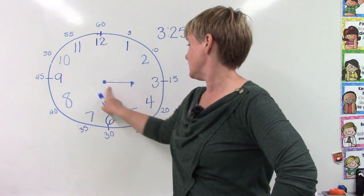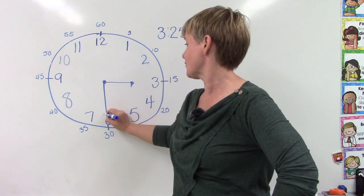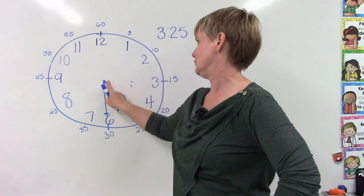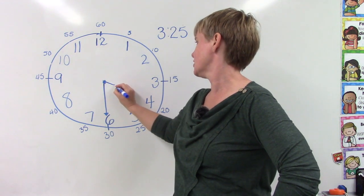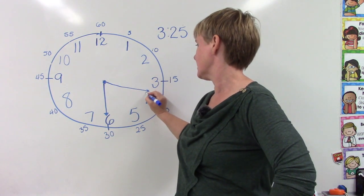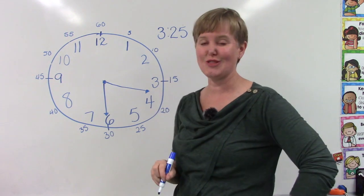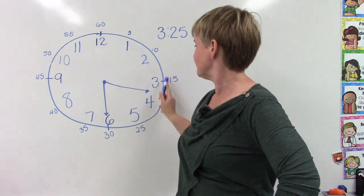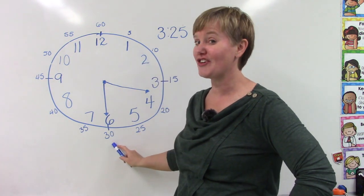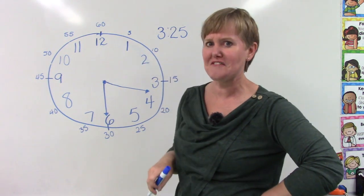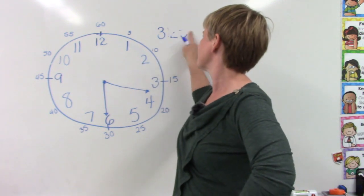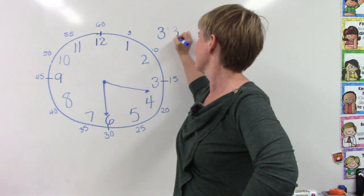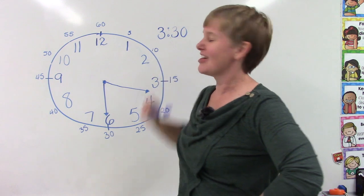Well, if I move this minute hand to the 6, I'm going to have to move my hour hand a little bit, won't I? So that it is halfway between the 3 and the 4. Well, let's count our minutes. 5, 10, 15, 20, 25, 30. I can't have 3:25 there anymore. I'm going to switch that to 3:30.